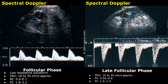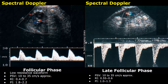Hello everyone, this is Dr. Sam, and today you will learn about ovarian artery Doppler waveforms throughout the menstrual cycle. We will start with the follicular phase. The sample volume is placed on the ovarian artery and spectral Doppler is applied, and this is the waveform produced. It is a low resistance waveform.